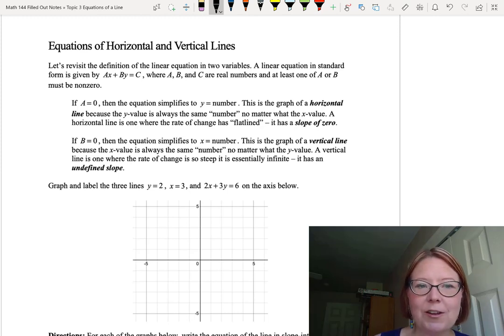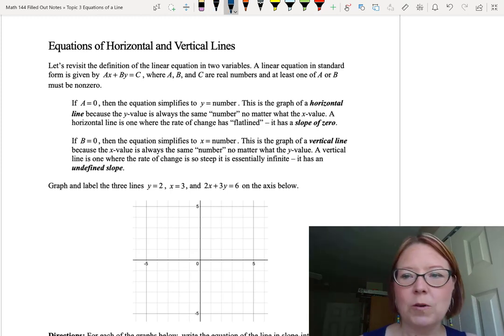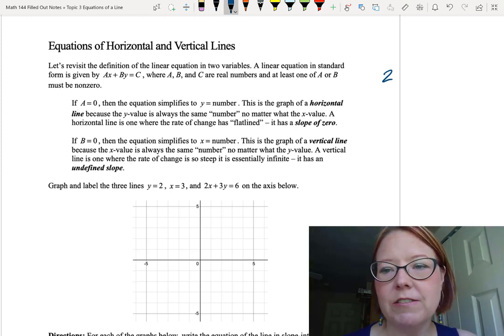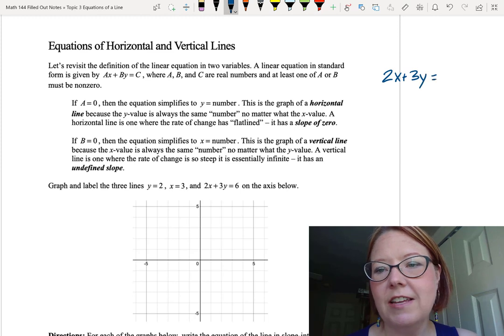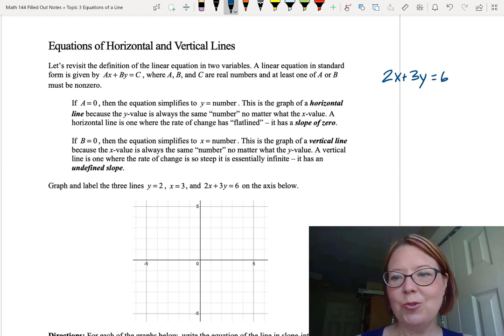At least one of a or b must be non-zero. For example, we could have the equation 2x plus 3y equals 6. a is 2, b is 3, c is 6.